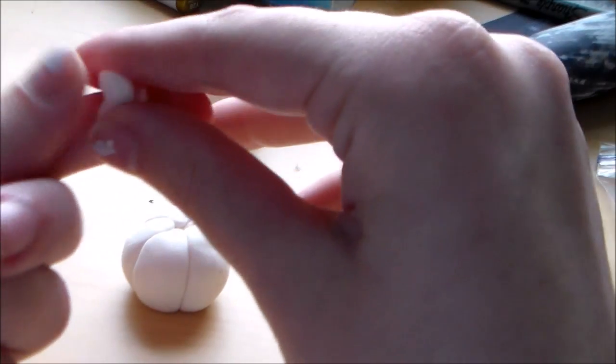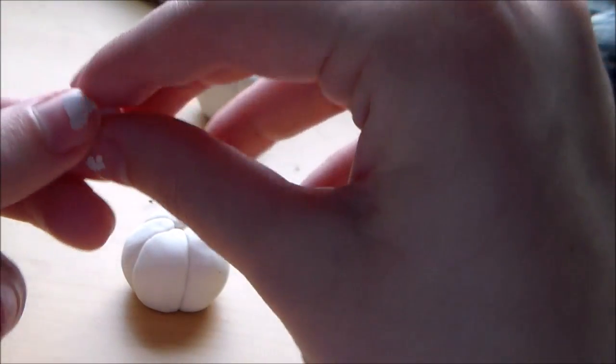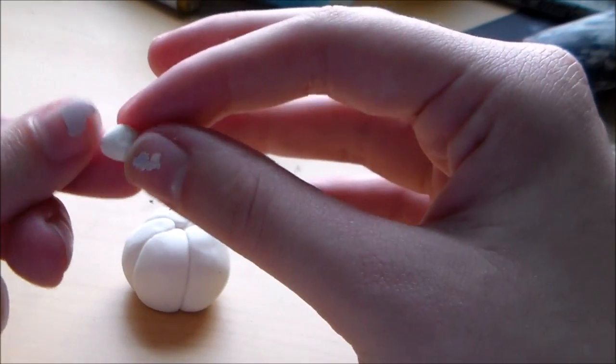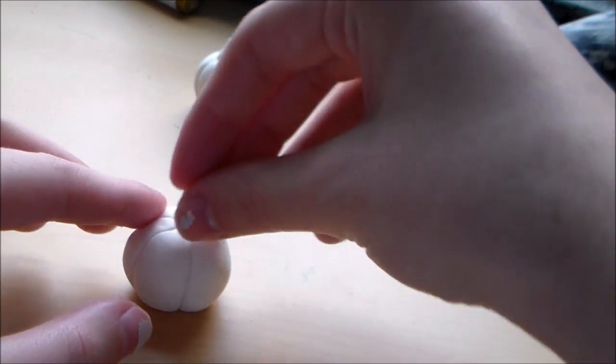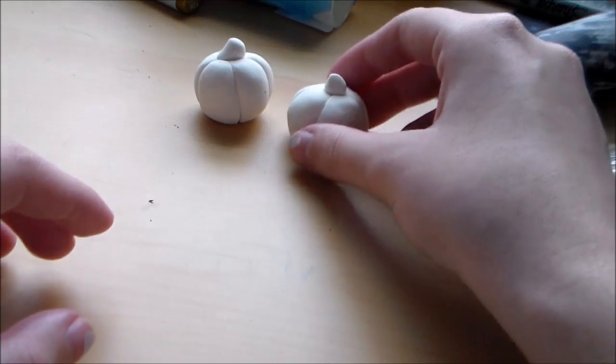And then take just a little bit of clay to make your stem with. And you're just kind of gonna make a square out of it and set it at the top and kind of push it in. And there we have pumpkins!